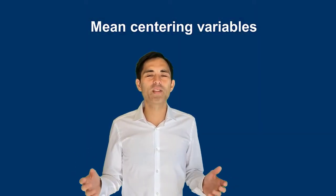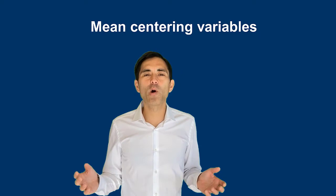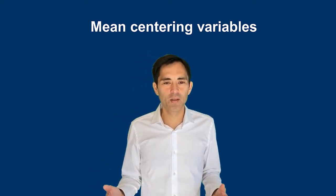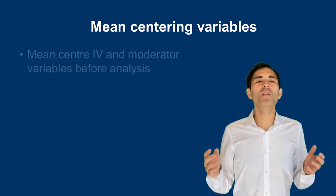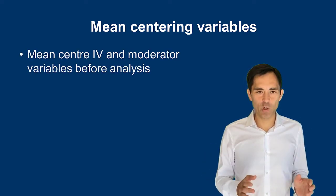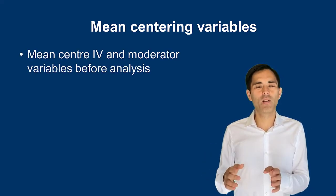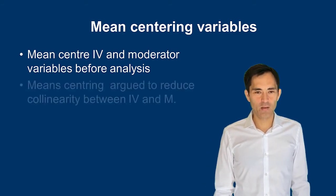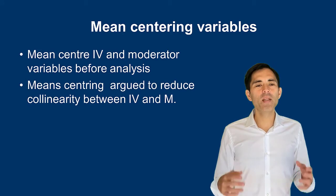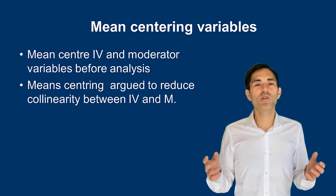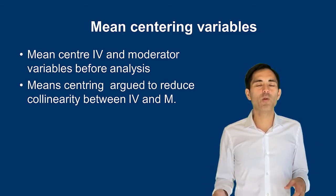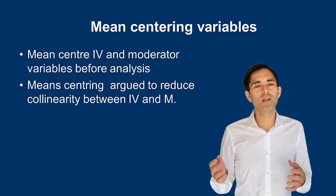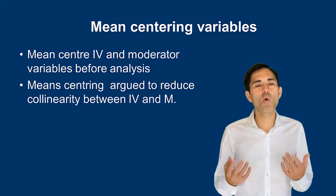I've already talked about mean-centering variables — it's very important in social science research, so let me return to it. It would be very important to mean-center your independent variable and your moderating variable before you run your analysis, because mean-centering reduces collinearity between those variables, which means we can trust the results more.